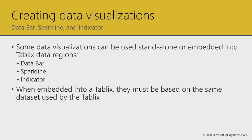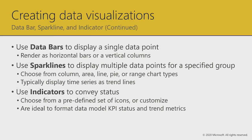The next three — data bar, sparkline, and indicator — group together and work very well inside of Tablix. Note that when you configure them, they must be based on the same dataset that the Tablix is bound to. We use data bars to display a single data point, rendered as either horizontal or vertical bars, making it easy to see relativity. When the eye is glancing at a column of numbers, it's hard to see relativity — a data bar really pronounces this.